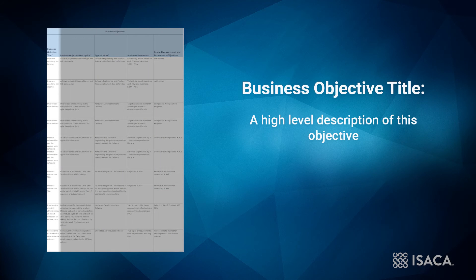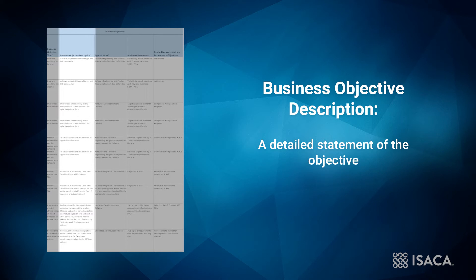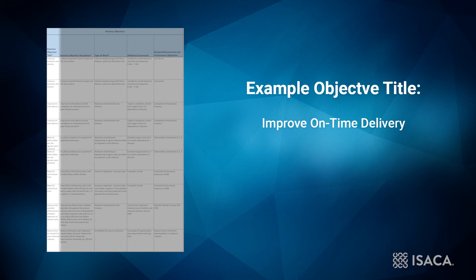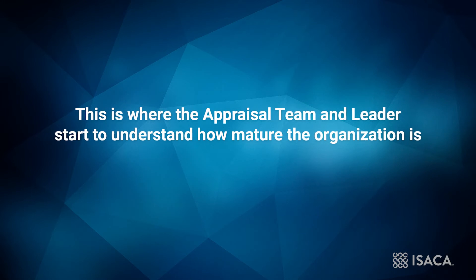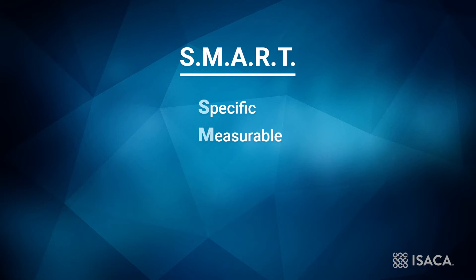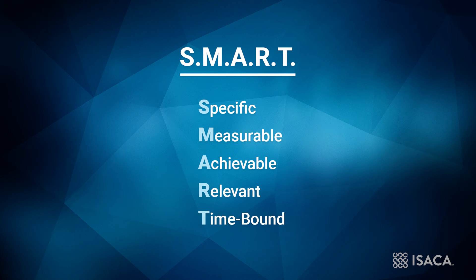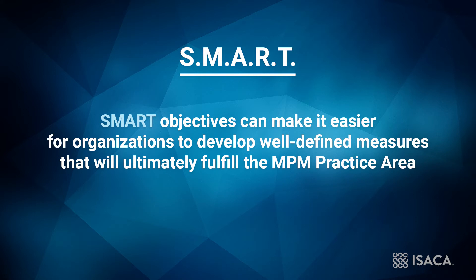The first column in this section is used to identify the Business Objective, which is usually a high-level description. The second column is a detailed statement of the objective, which may be how the organization defines it. For example, if the first column identifies the objective as improving on-time delivery, the second column might expand on this by saying: achieve 90% of scheduled milestone dates on commercial projects in the next 12 months. This is where the appraisal team leader starts to understand how mature the organization is. Setting SMART objectives can make it easier for organizations to develop well-defined measures that will ultimately fulfill the managing performance and measurement practice area.